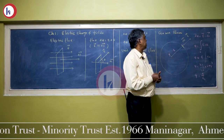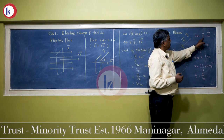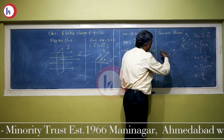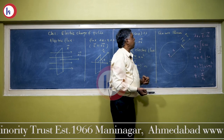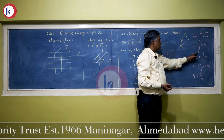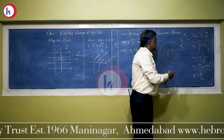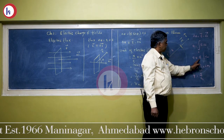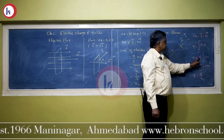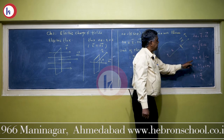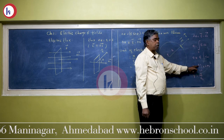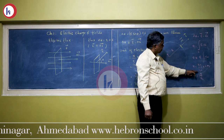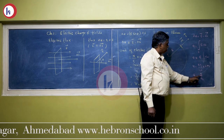Therefore, the flux linked with the surface is d phi equals E vector dot dS vector. This is the flux linked with one segment. To find the flux linked with the whole surface, we integrate: phi equals the closed surface integral of E dS. This closed surface is called a Gaussian surface. Taking E outside the integral, phi equals E times the integral of dS. The electric field E equals kq upon r squared, where k equals 1 upon 4 pi epsilon 0. The integral of dS over a sphere equals 4 pi r squared. Substituting and simplifying, we finally get phi equals q upon epsilon 0.